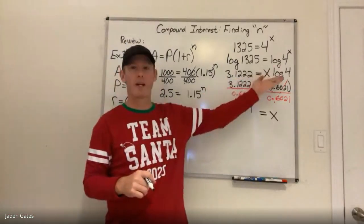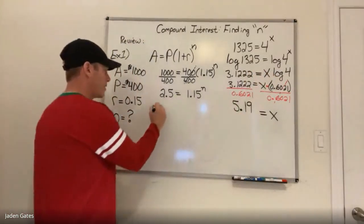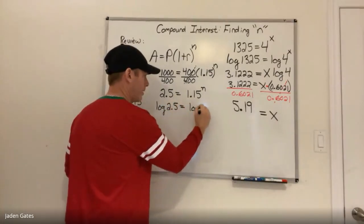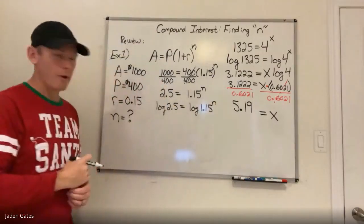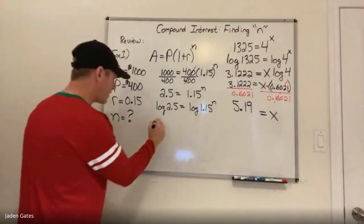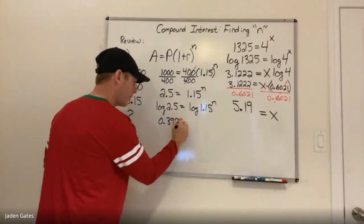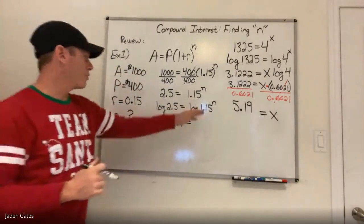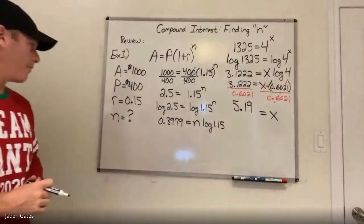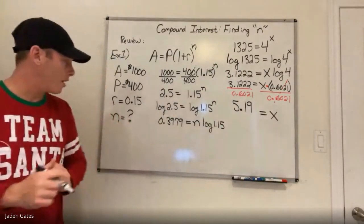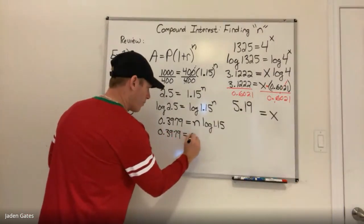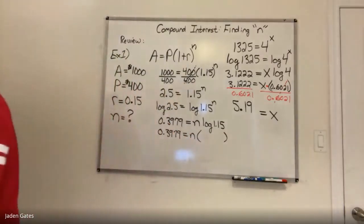Now we're in an almost identical situation to the review example. We take the log of both sides. log(2.5) — I'll get a small number — that's 0.3979. Using the log rule I bring the n down in front, so I have 0.3979 = n × log(1.15). I'll simplify by taking log(1.15), which is a very small number.